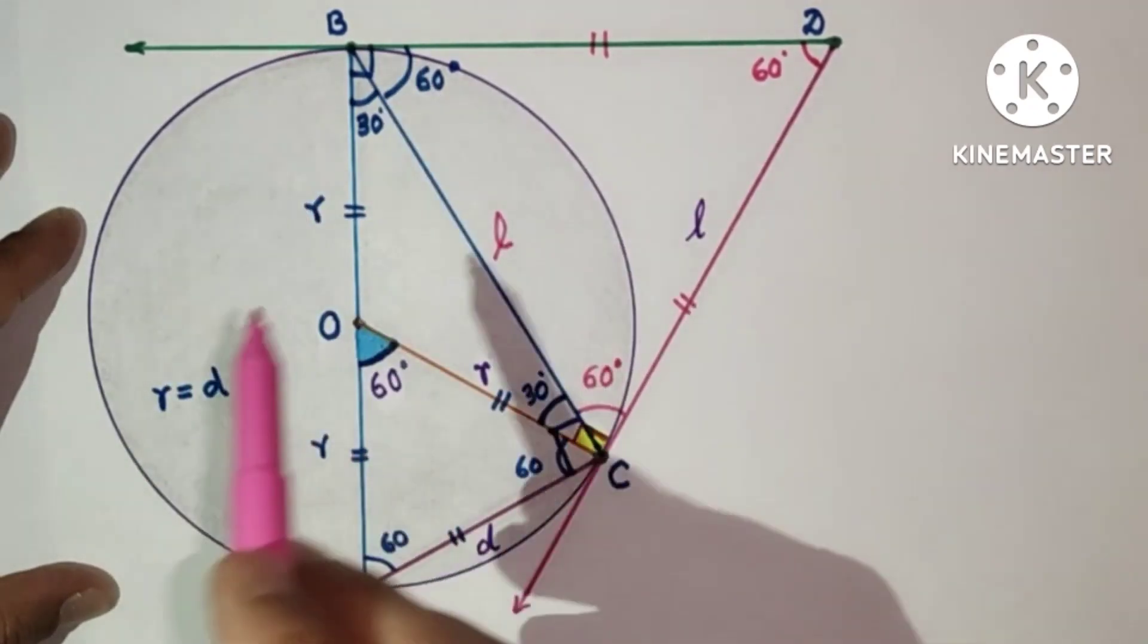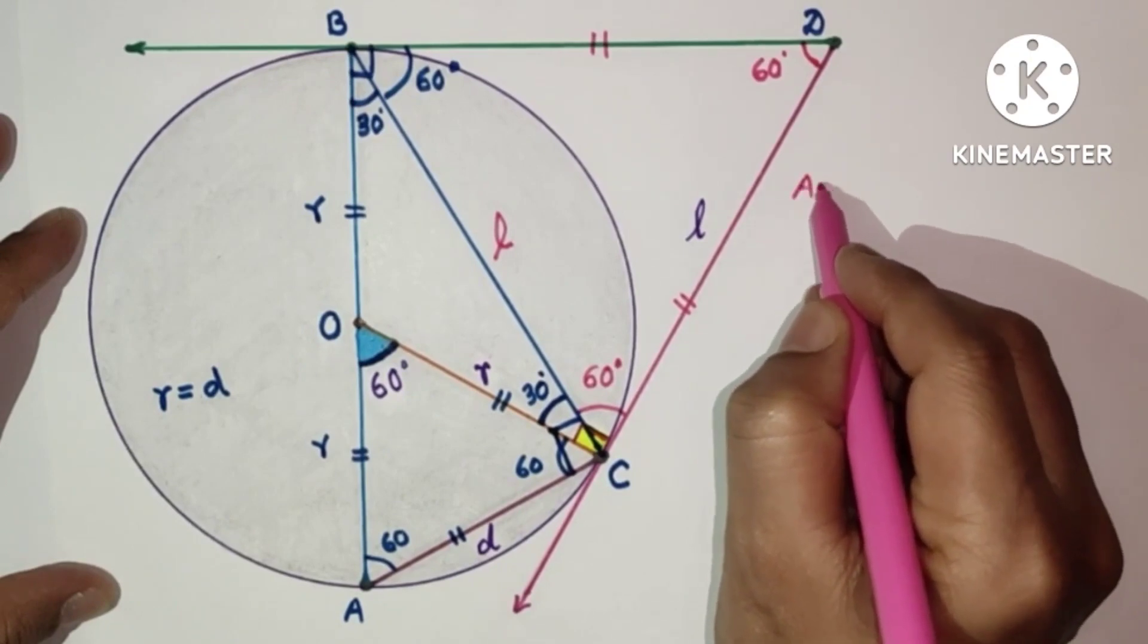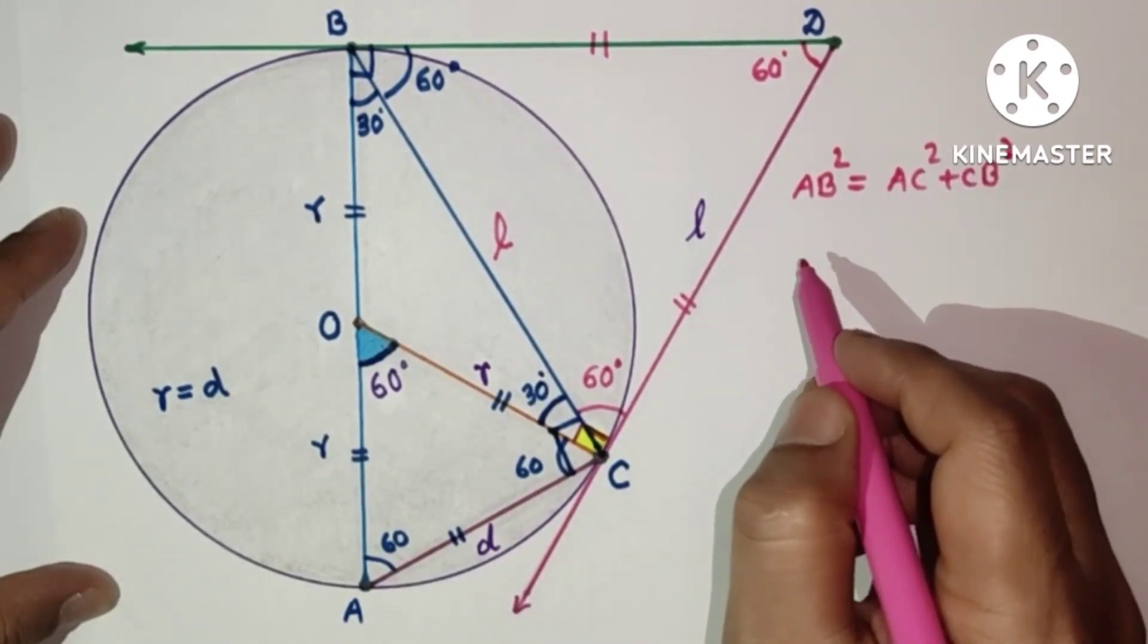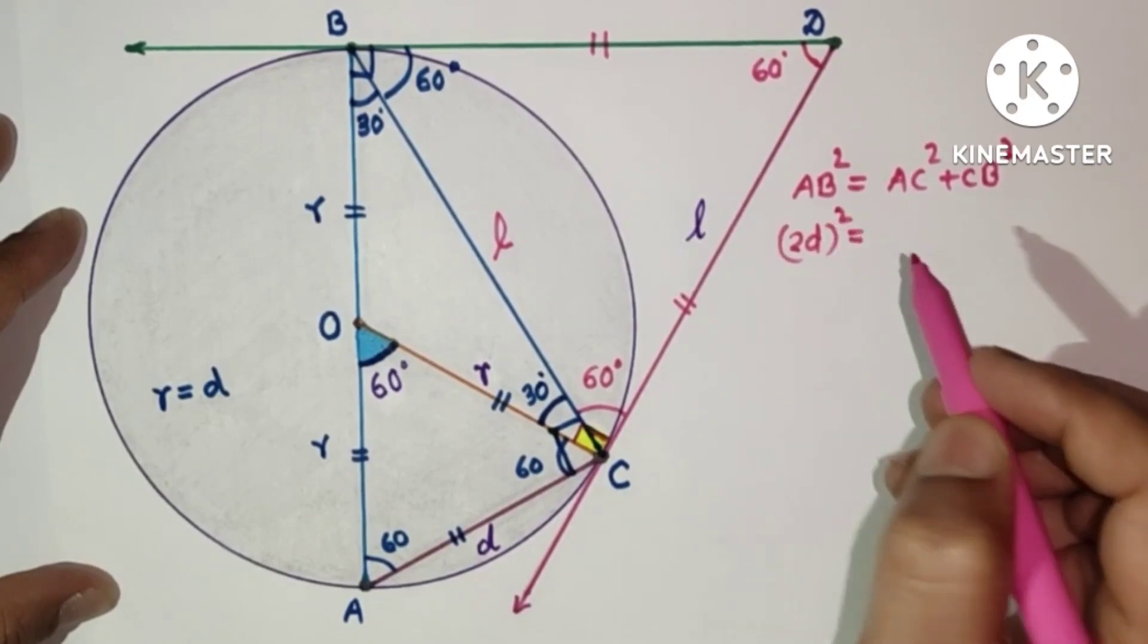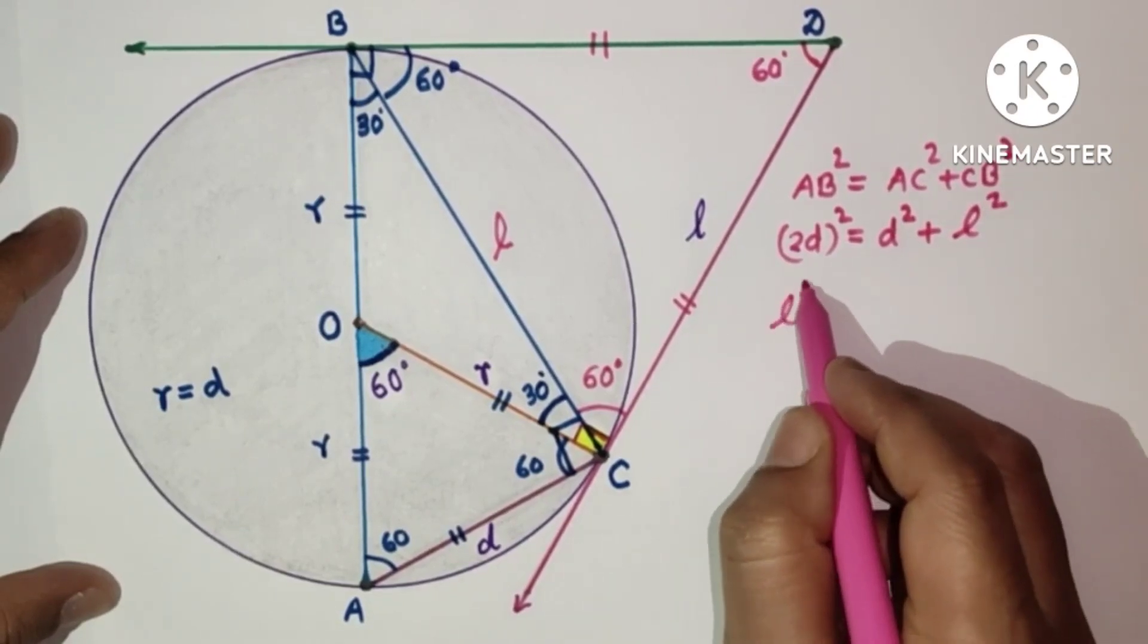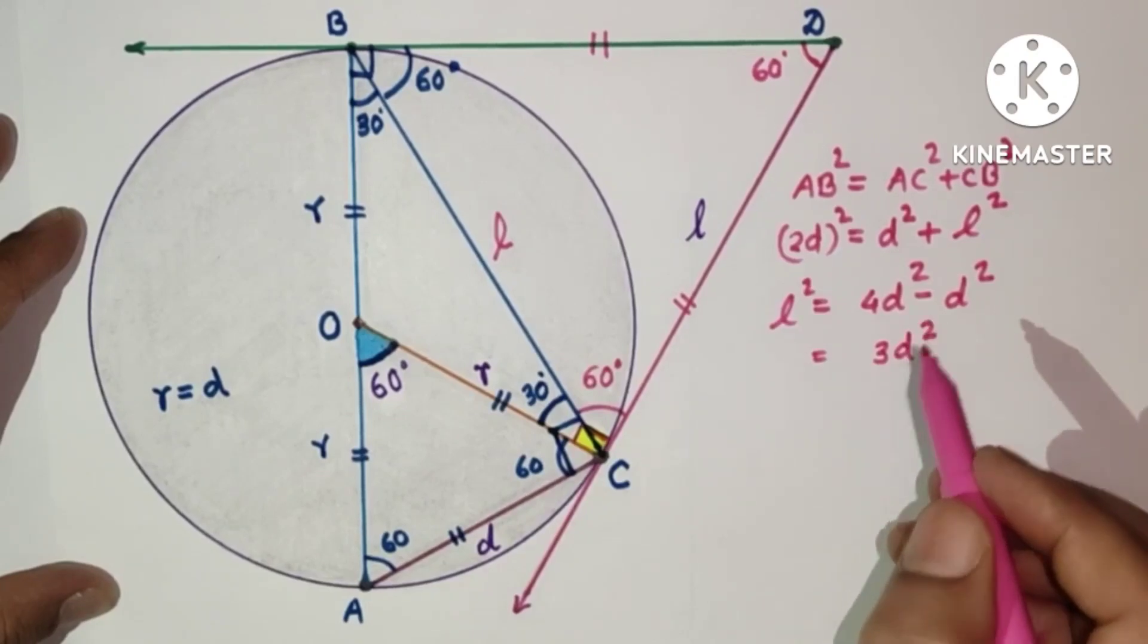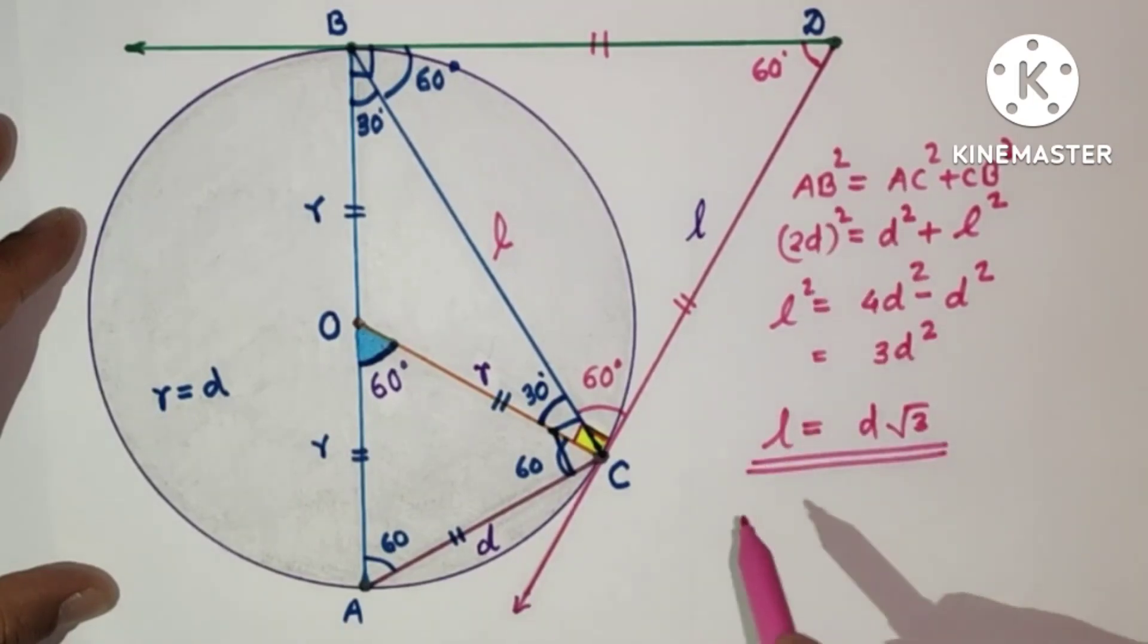Now we can use Pythagorean theorem. So this is hypotenuse and these two are legs of the right triangle. So we can say that AB squared is equal to AC squared plus CB squared. AB is 2R. R is D, so we can substitute R as D. So 2R means 2D. AB whole square is equal to AC is D, and CB is to be found, that is L. So L squared is equal to 4D squared minus D squared, and that is 3D squared. So L is equal to square root of 3D squared, so D root 3. In terms of D, length L will be D root 3, and that is the answer.